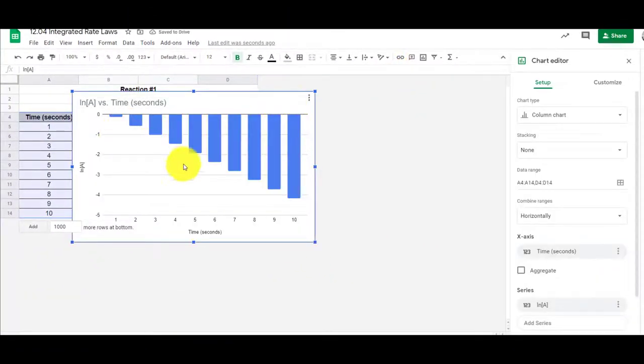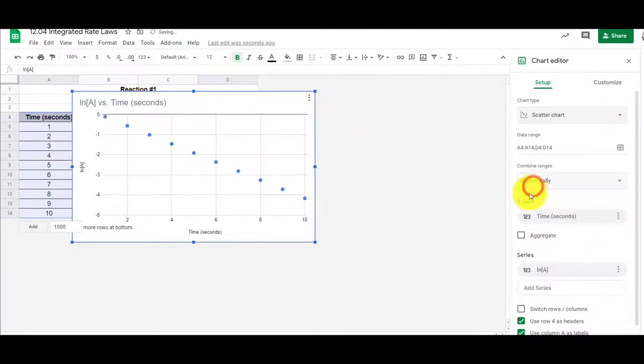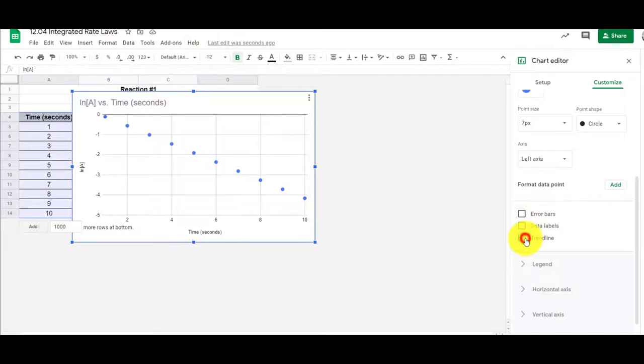Well, that's not a useful graph to us, but it is looking pretty linear. So let's change this to a scatter plot. That's looking pretty linear. Okay, let's customize this. And I can put a trend line in. Oh, looking better still.